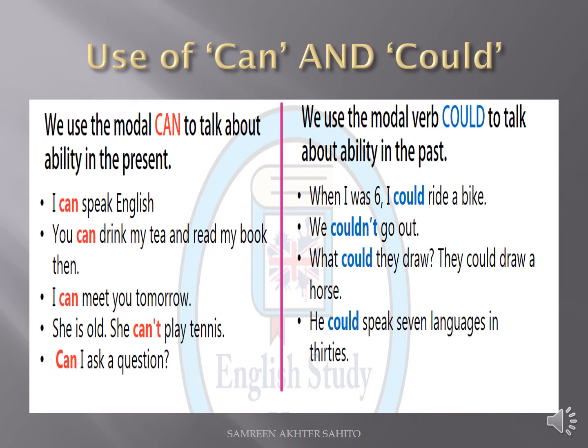Now, the first one — the use of can and could. How and where can we use these modal verbs? In which tenses can we use can and could? Look at the first column. We use the modal verb 'can' to talk about ability in the present tense.